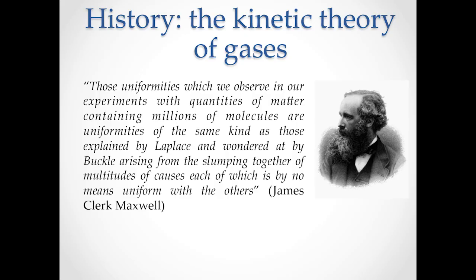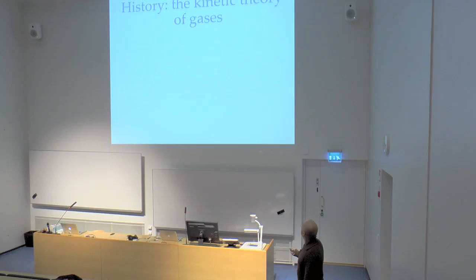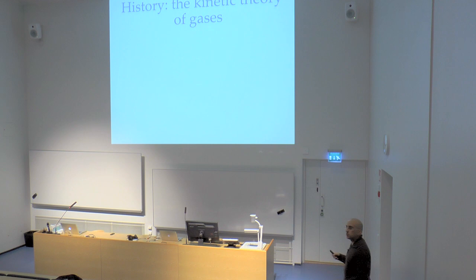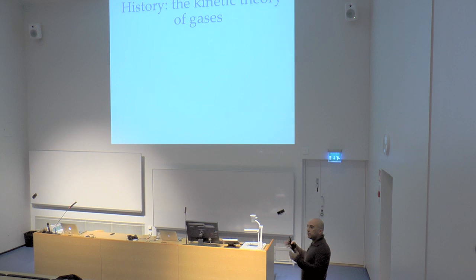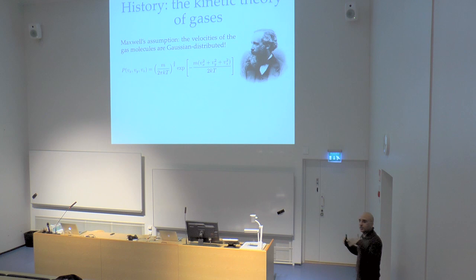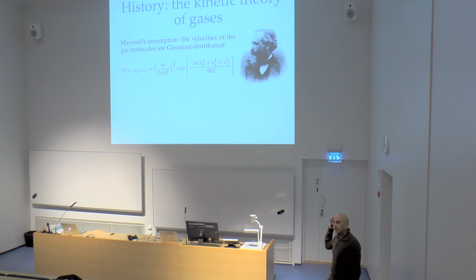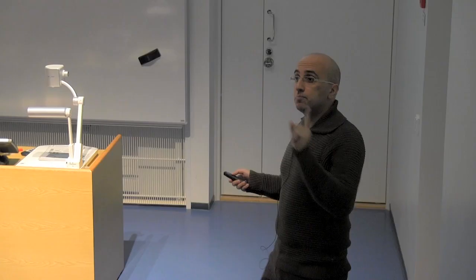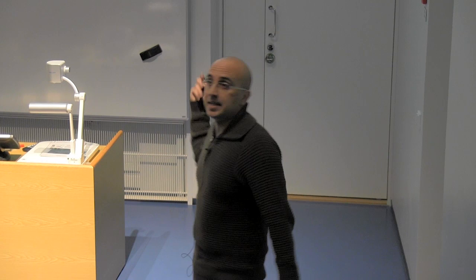Maxwell said those uniformities we observe in experiments with quantities of matter containing millions of molecules are uniformities of the same kind as those explained by Laplace and wondered at by Buckle — arising from the clumping together of a multitude of causes, each by no means uniform with the others. He took the Gaussian distribution from the history of social numbers and assumed it also describes the distribution of particle velocities. This was an assumption — it was Boltzmann who later proved that this is the inevitable equilibrium distribution, which is a far deeper result.